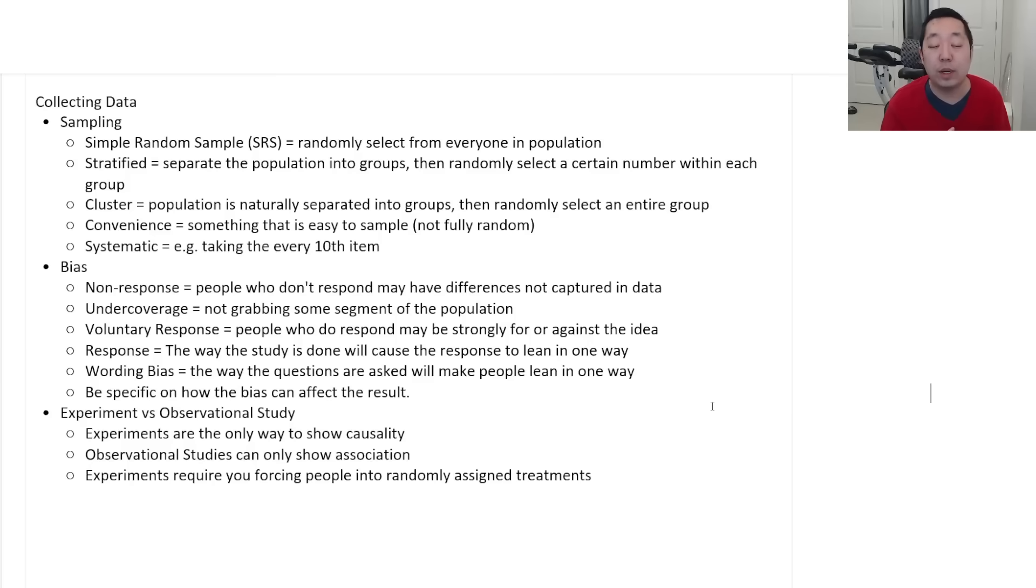Don't just say that the presence of the police officer would cause bias or response bias. You need to be more specific about how it affects the response. And then experiment versus observational study. Experiments are the only way we do causality. We can only show association by observational studies. And the difference between experiments and observational studies is in experiments, you are randomly forcing people or the things under treatments and you're randomly assigning them into treatments. You are not letting themselves select.